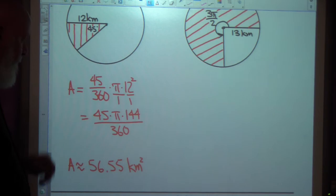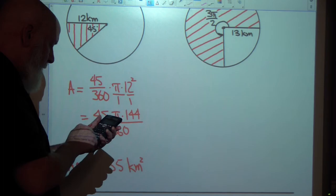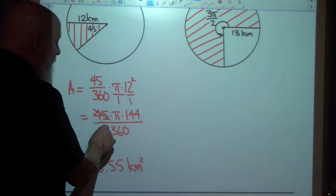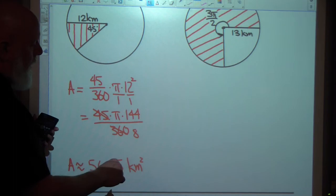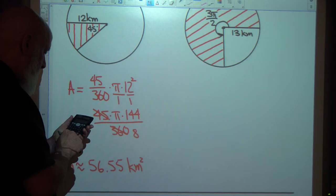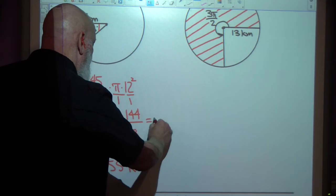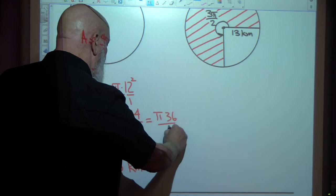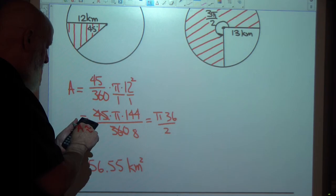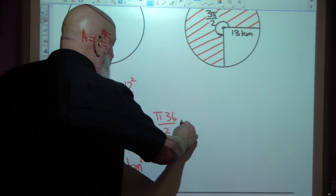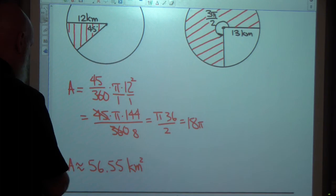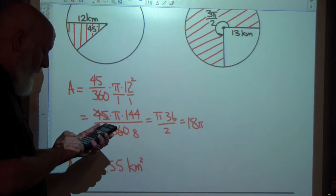So they went like this. 45 times pi times 144 over 360. And then they just reduced it. And I said, well, I can see that both of these will divide by 45. So this turns into a 1. That turns into an 8. These will both divide by at least 4. That'll give me pi times 36 over 2. That's 18 pi. 144 divided by 8. Yeah, this is going to be 18 pi kilometers.